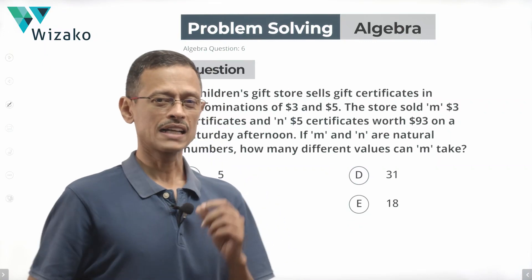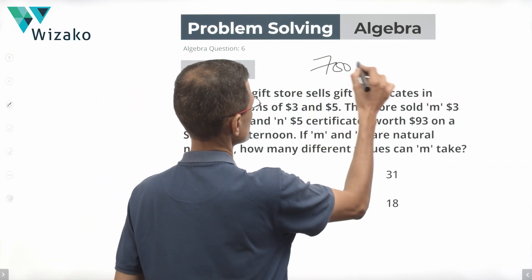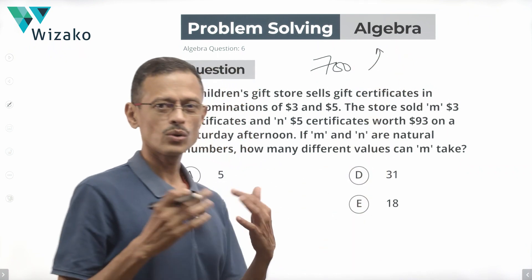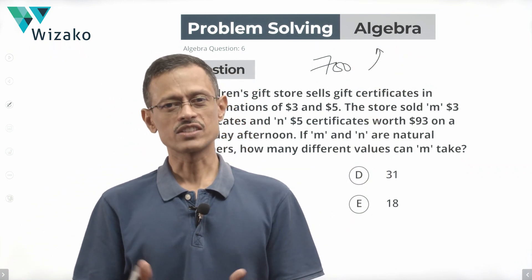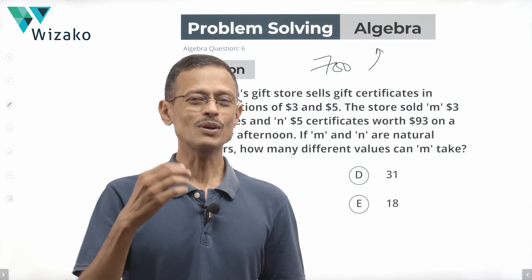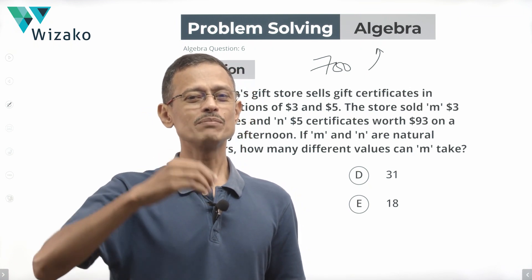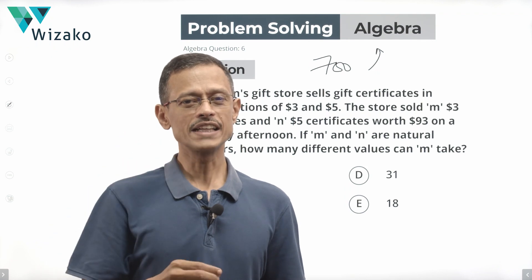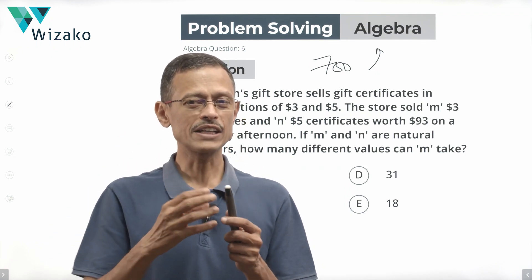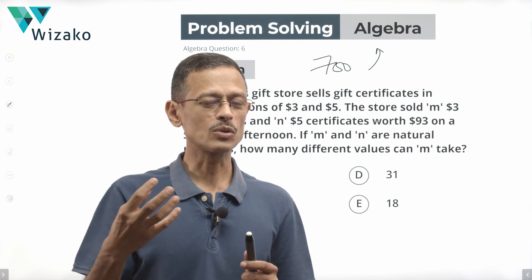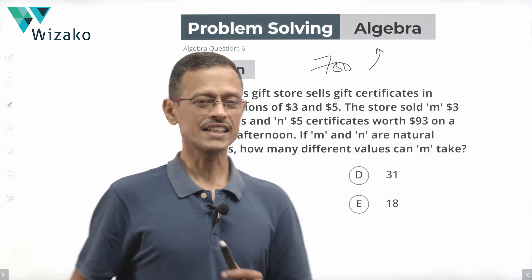This is a very interesting question. I'll classify this as a GMAT 700-level problem solving question in algebra. At the core of it, it will appear to be a linear equations question, which it is. But what makes this a 700-level question is it goes a little beyond linear equations. We essentially need to deduce something about the way numbers behave to get the answer.